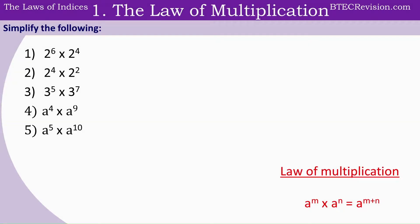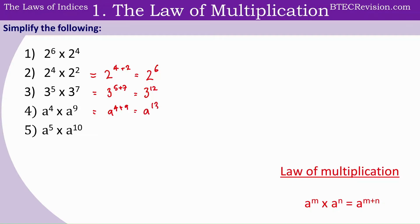Pause the video here and complete the rest of the questions. Looking at question 2, we have 2 to the power of 4 plus 2, which is equal to 2 to the power of 6. Question 3, that's 3 to the power of 5 plus 7, which is 3 to the power of 12. Question 4, that's a to the power of 4 plus 9, which is equal to a to the power of 13. And question 5, a to the power of 5 plus 10, which is equal to a to the power of 15.